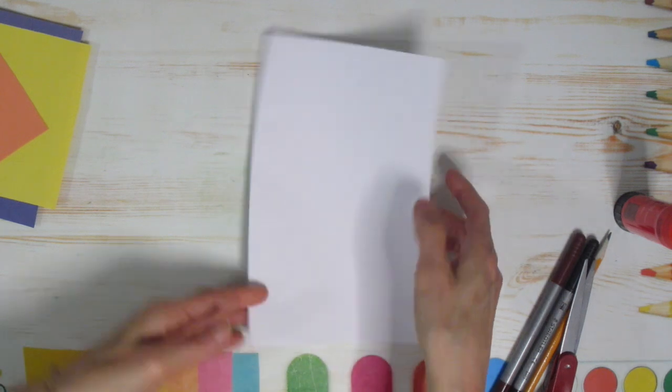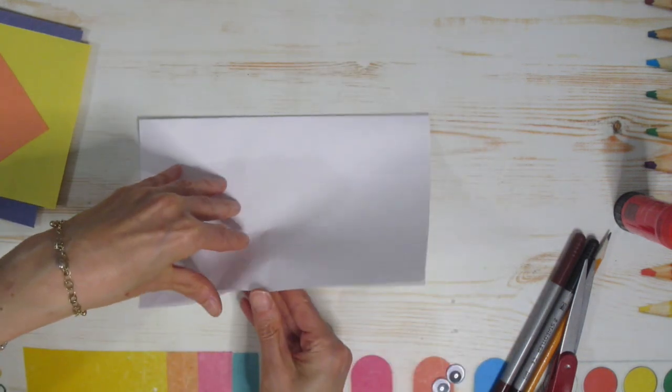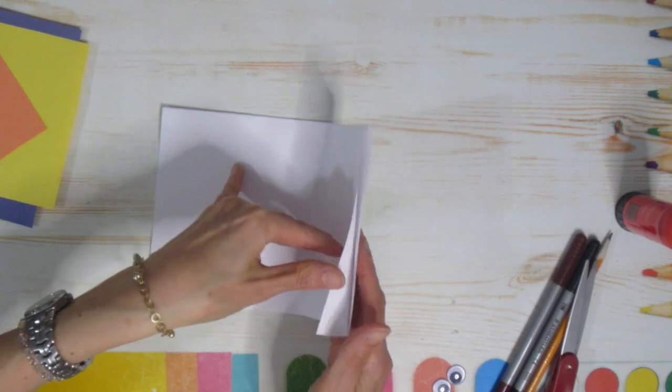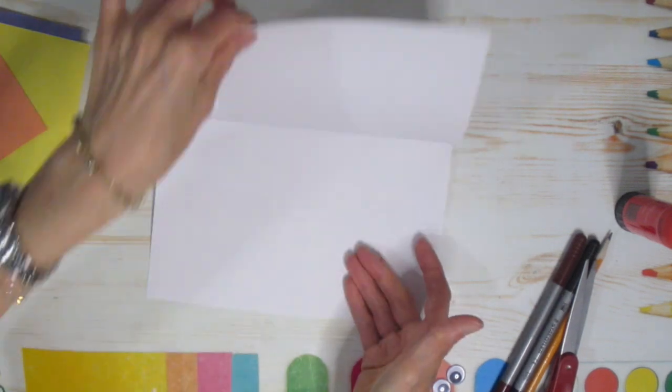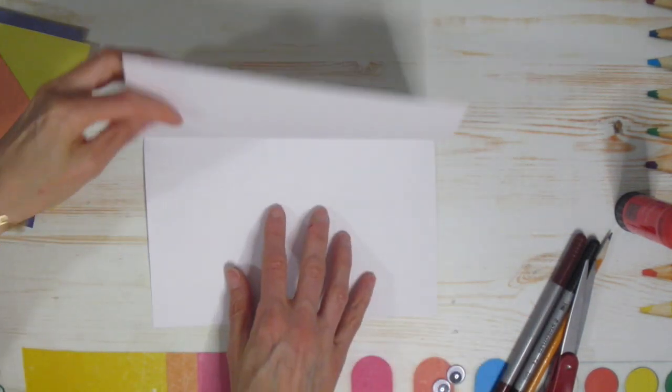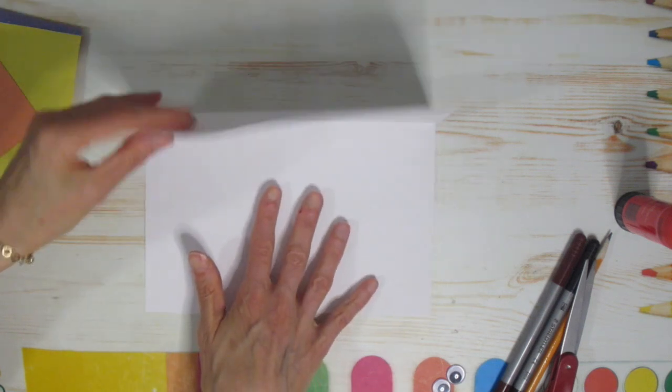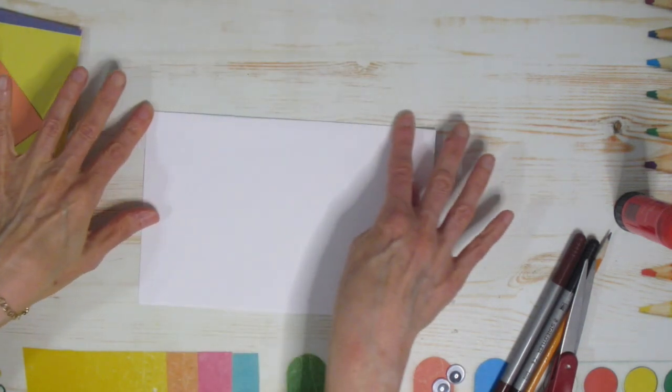But I want to work on it the other way so I'm just going to flip it so that it lifts up this way. So I can pull bottom to top. This will be the inside of my card where I can write a message, draw a picture, anything I would like. We're going to work on the outside of our card today.